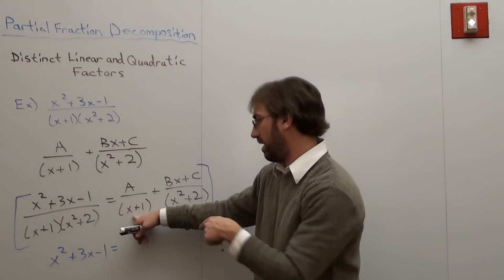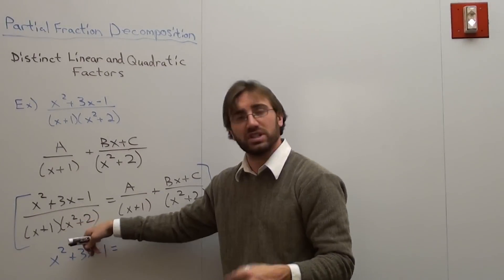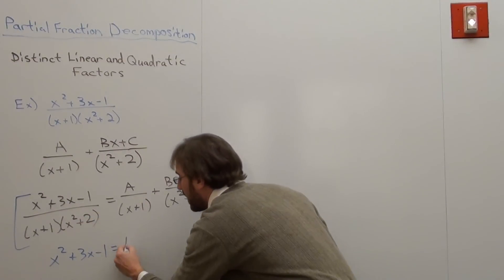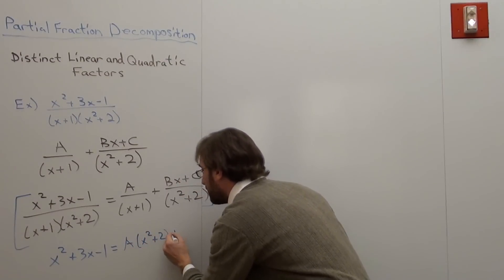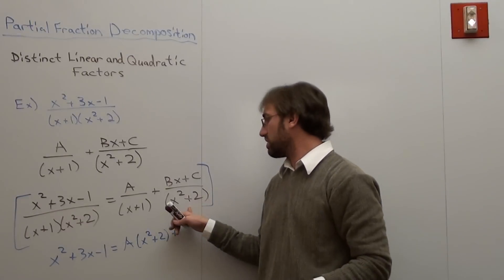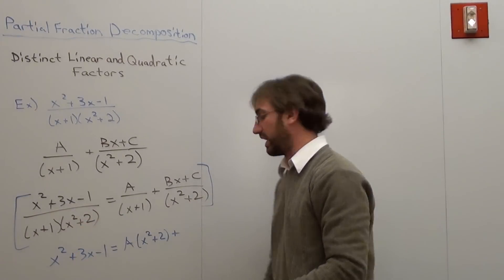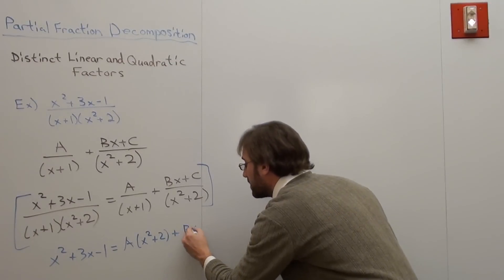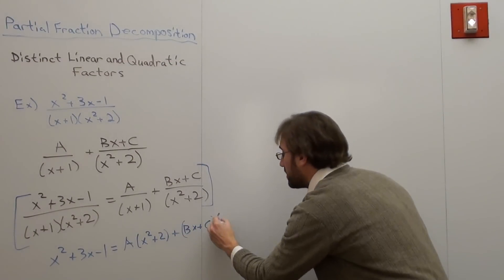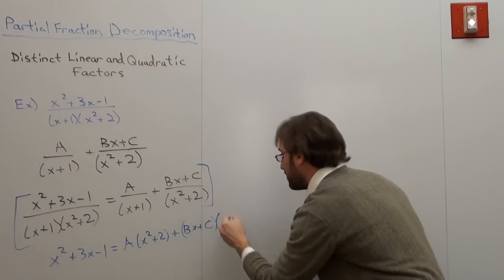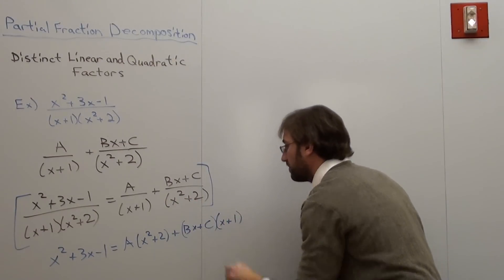Equals. Okay. Well, the x plus 1 is done, but not the x squared plus 2. So what I got is a, and then x squared plus 2, and the plus, the x squared plus 2 is canceled, but not the x plus 1. So what I got is bx plus c, put that into quantity, times x plus 1.